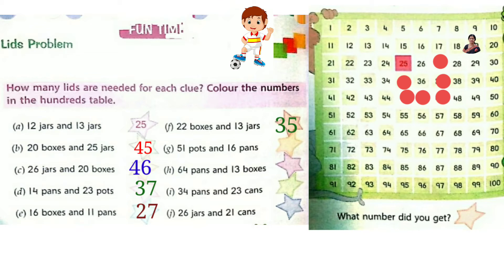Now question G: 51 pots and 16 pans. 51 plus 16. In the 1's place: 1 and 6, 1 plus 6 is 7. And in the 10's place: 5 and 1, 5 plus 1 is 6. The answer is 67. Colour 67 in the 100's table.